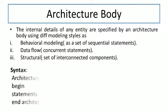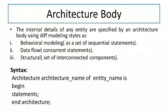Now how do we define our architecture? Let us see this with the help of syntax. We write the keyword 'architecture' followed by the architecture name and the entity name — for example, 'architecture name of entity_name'. The entity name will already be defined and we just use it as-is. After that we write 'begin', add the statements — which can be sequential or concurrent — and finally we end the architecture.